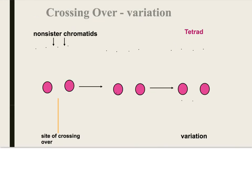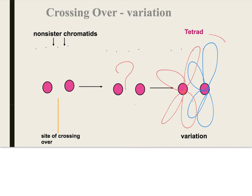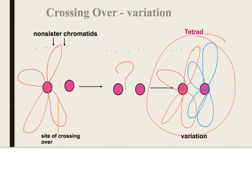Here is the variation business. So here's our tetrad, right? Let's talk about crossing over. And this is where the crossing over happens, this is where DNA is switched.